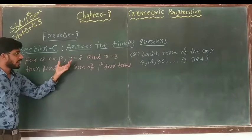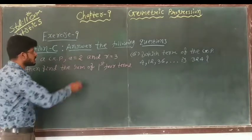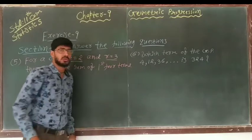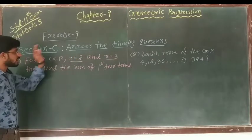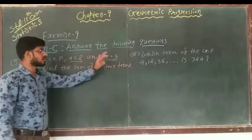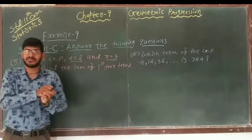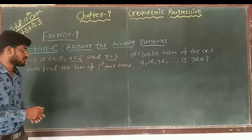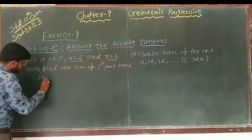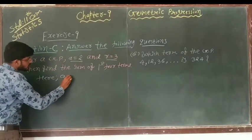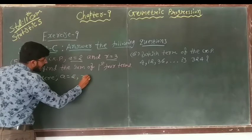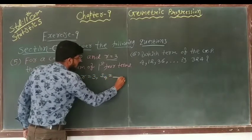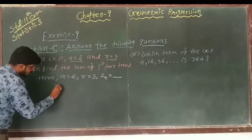We have a GP where A equals 2, meaning the first term is 2, and R equals 3. We need to find the sum of the first 4 terms, that is S4. So here A equals 2 and R equals 3, and we will find S4.